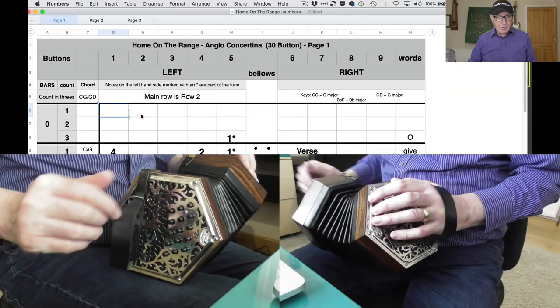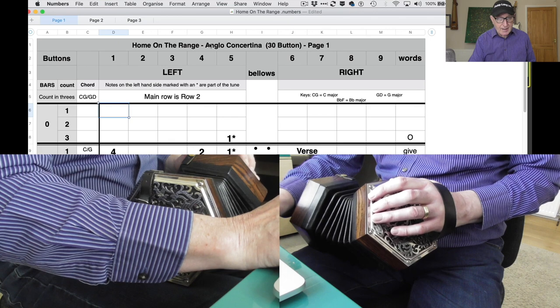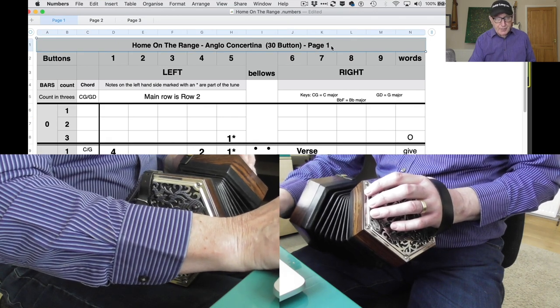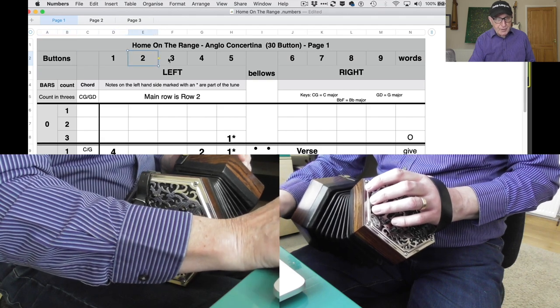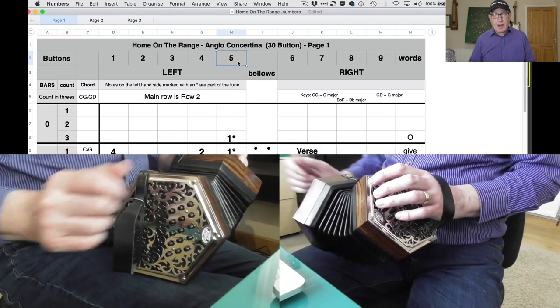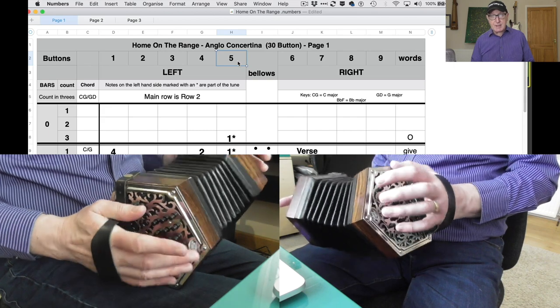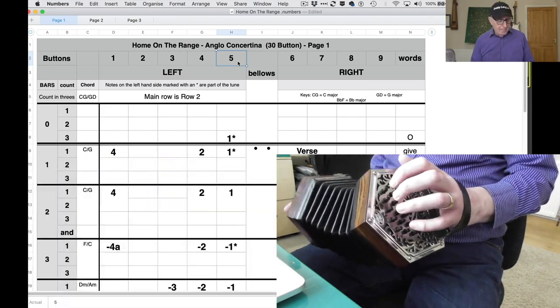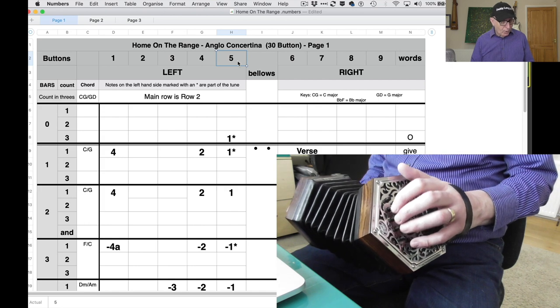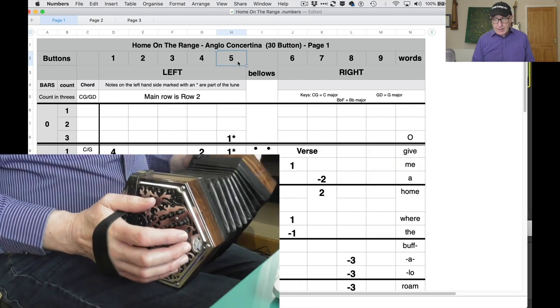So let's have a look around the page here. Up the top, got the title. This is page one because there are three pages. We've got the buttons along here, one, two, three, four, five. This is the way I number my buttons. It's not standard, something peculiar to me. On the left hand side I number my buttons one, two, three, four, five on all three rows.